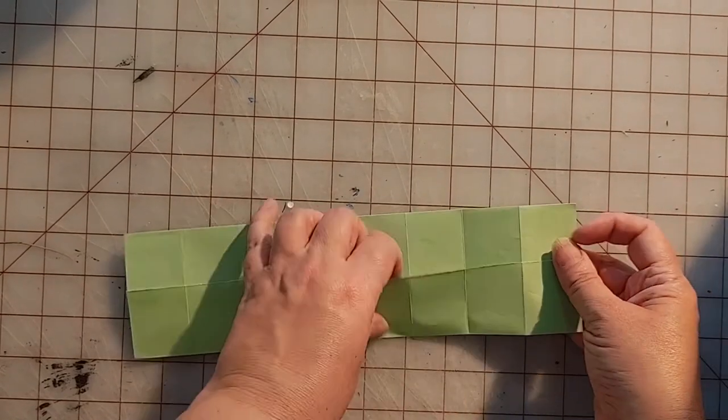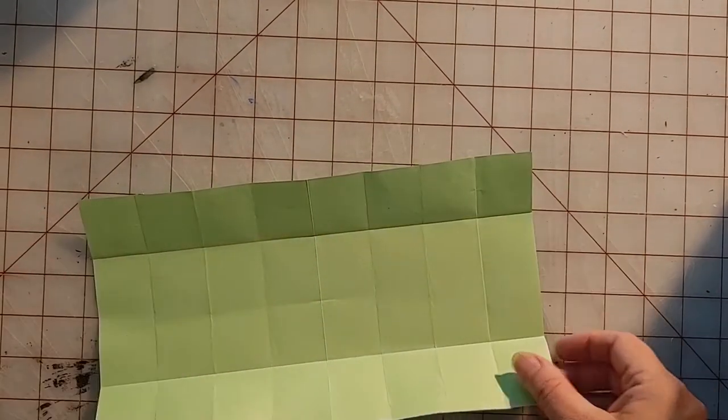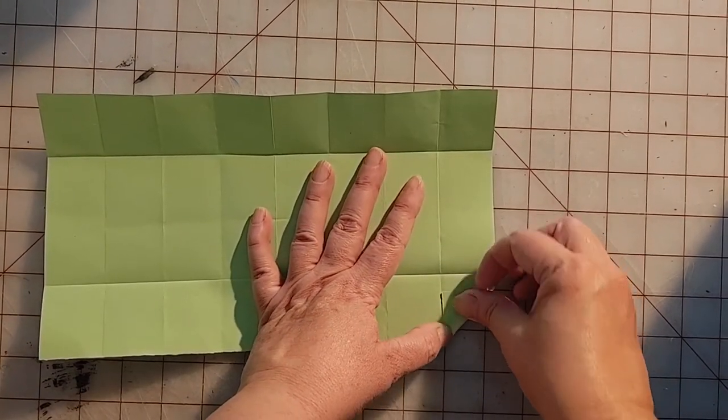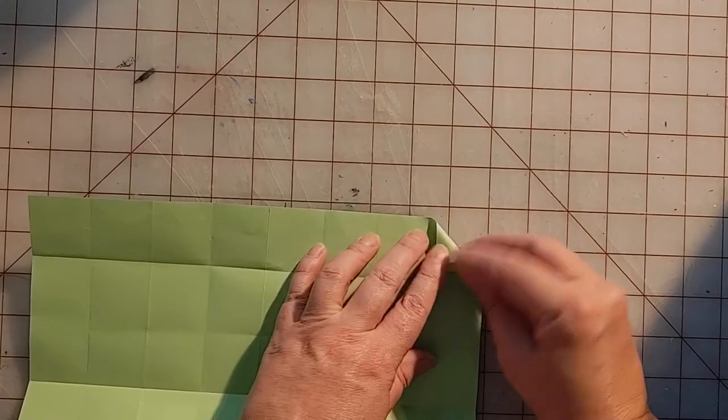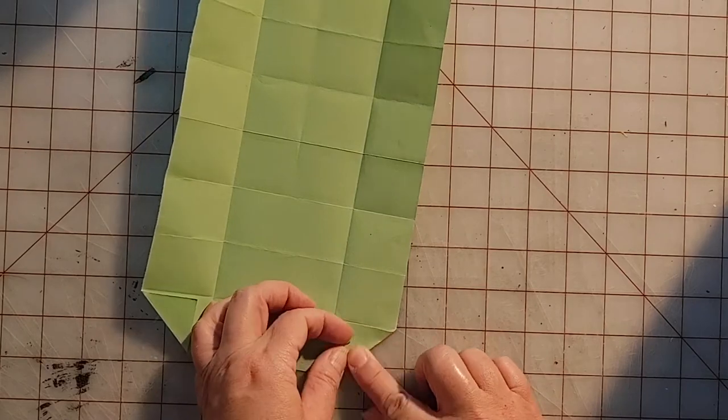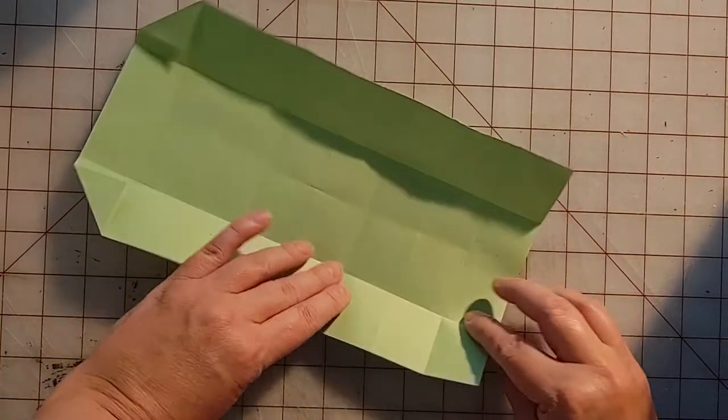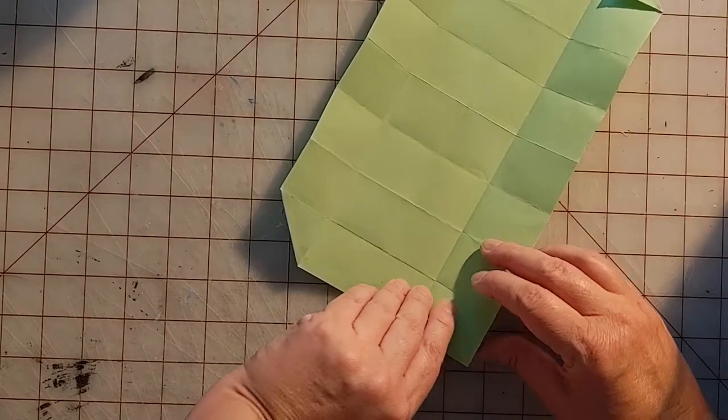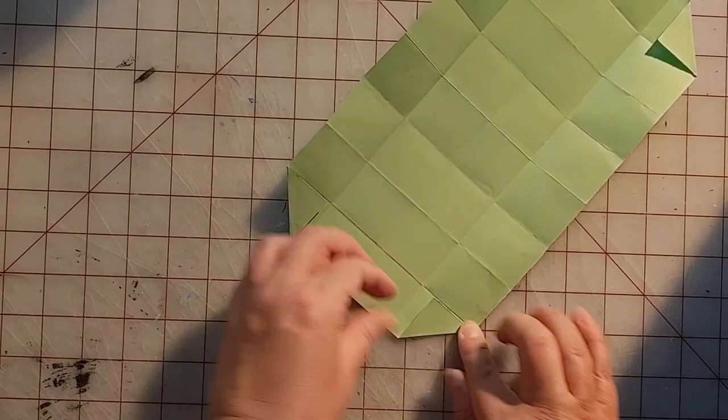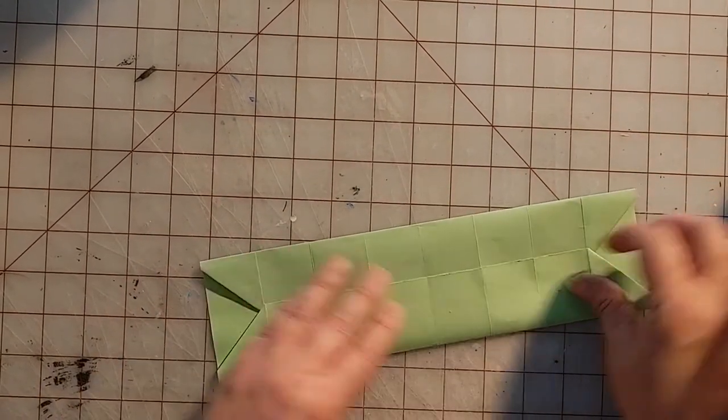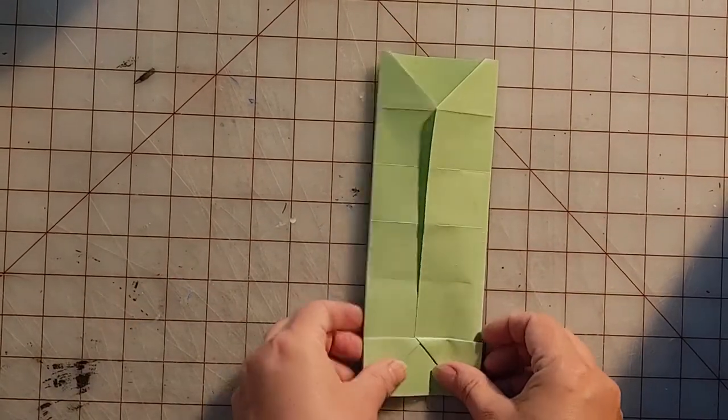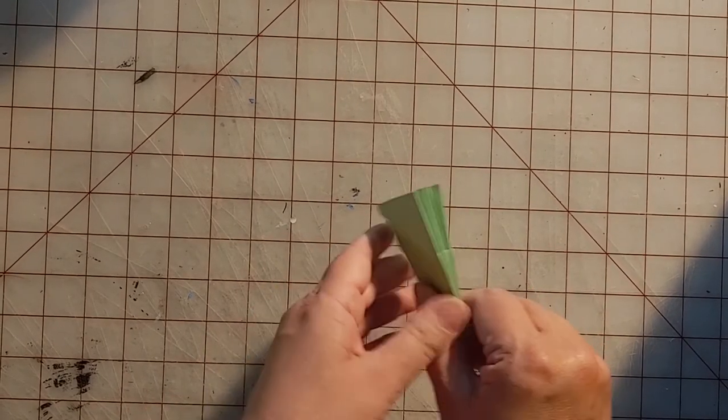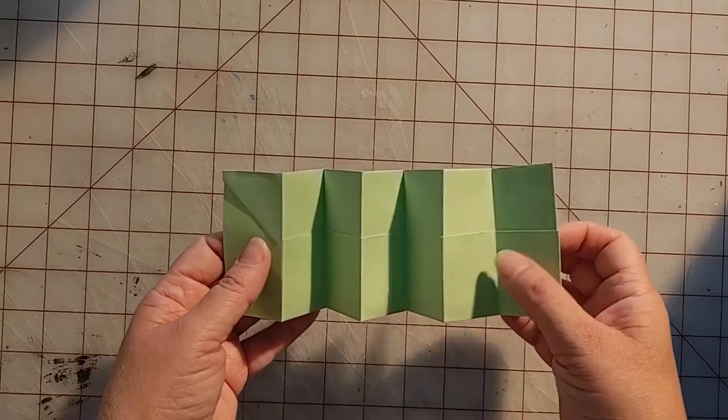And then I'm going to fold in all of these corners. So I'm folding the corner to the first fold, I'm going to do that on all four edges. Now I'm going to refold my accordion, I'm going to make sure those folds are nice and crisp, and this makes up my book.